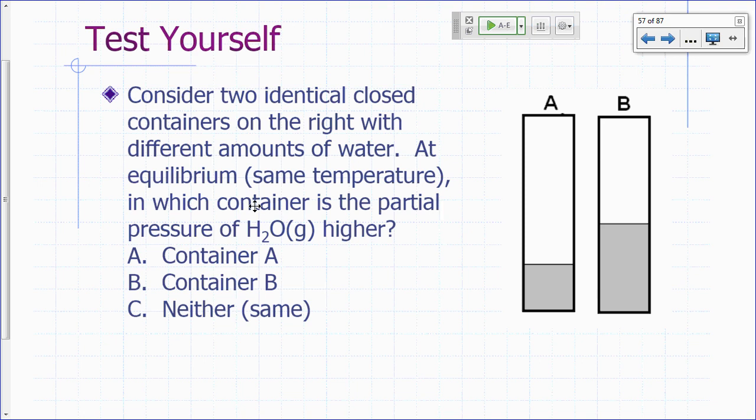Clicker question: consider two enclosed, identical closed containers with different amounts of water. The liquid water is in equilibrium with water vapor. At equilibrium, at the same temperature — both containers at the same temperature — in which container will the partial pressure of water be higher? Container A, container B, or will it be the same?